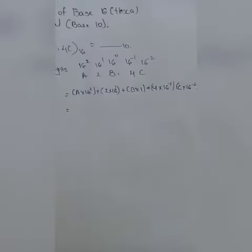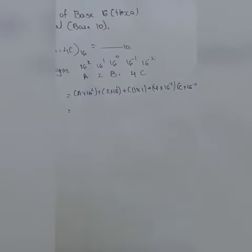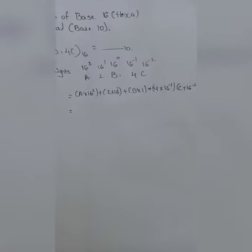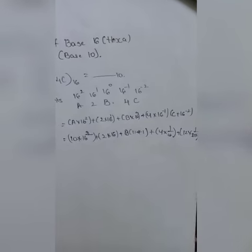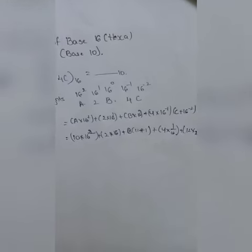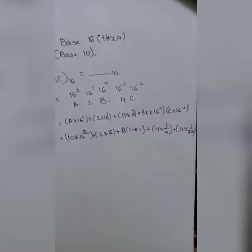If we multiply the positional weights equal to R to the power, we will multiply this line. What we will add is: A equals 10 in base 16, 2 equals 2, B equals 11, 4 equals 4, and C equals 12.